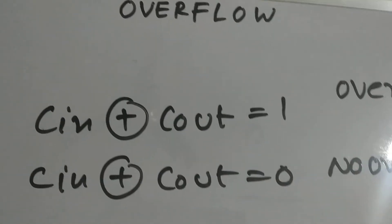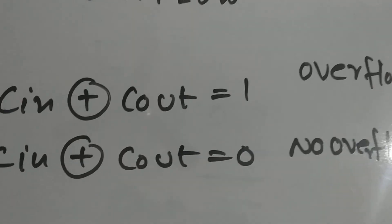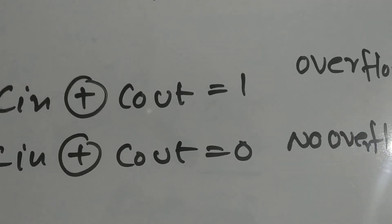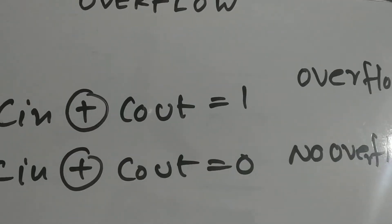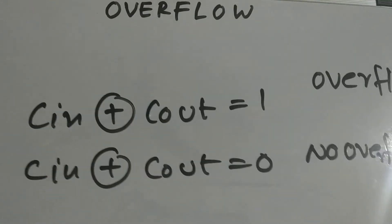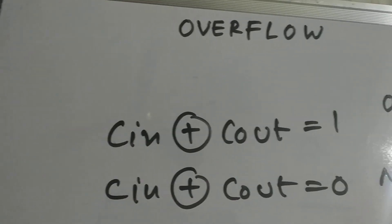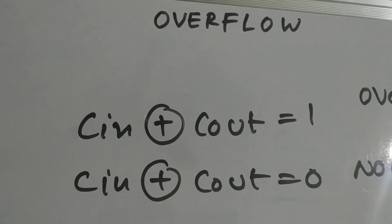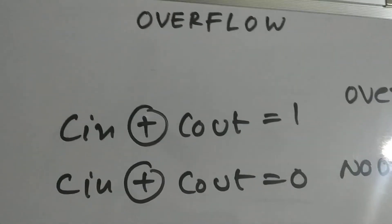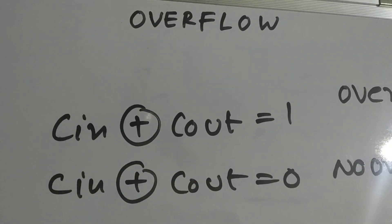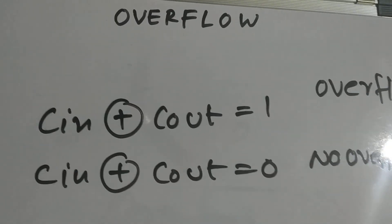Don't forget these two conditions — if you forget them you're in trouble. If you remember them, you can solve overflow problems within seconds. The range is most important, then check C_in and C_out.